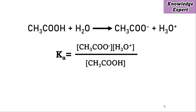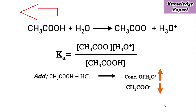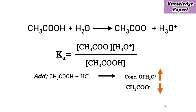The dissociation constant has a constant value at any given temperature. So if we add HCl to this acetic acid, the concentration of H₃O⁺ will increase. To maintain Ka constant, the concentration of acetate ion will fall. The equilibrium will shift towards the left-hand side because of the excess production of H₃O⁺ ions, which were furnished by the dissociation of HCl, according to Le Chatelier's principle.